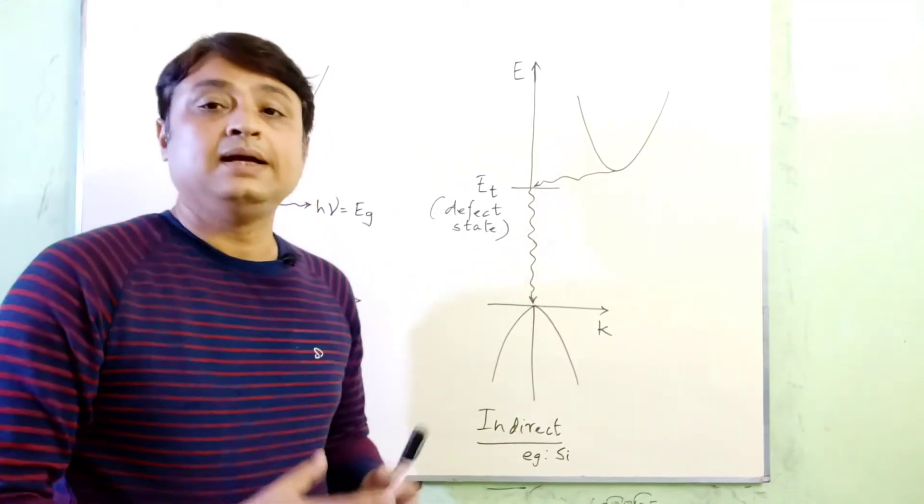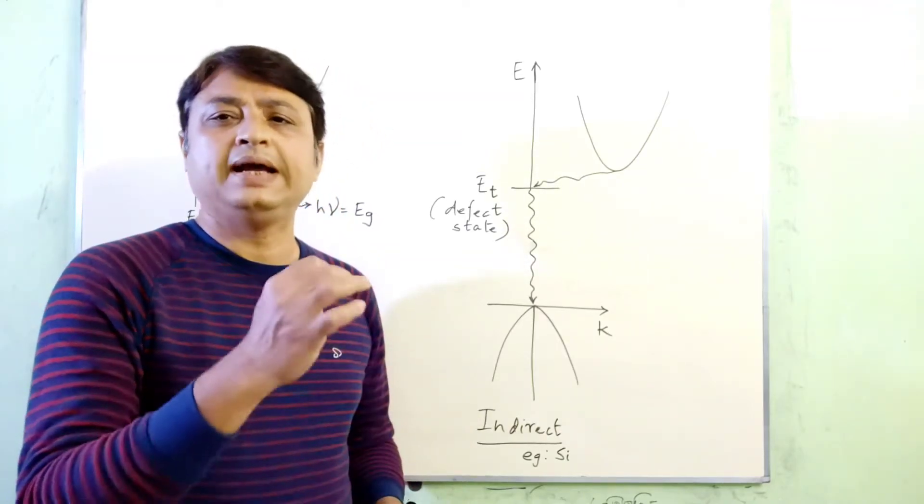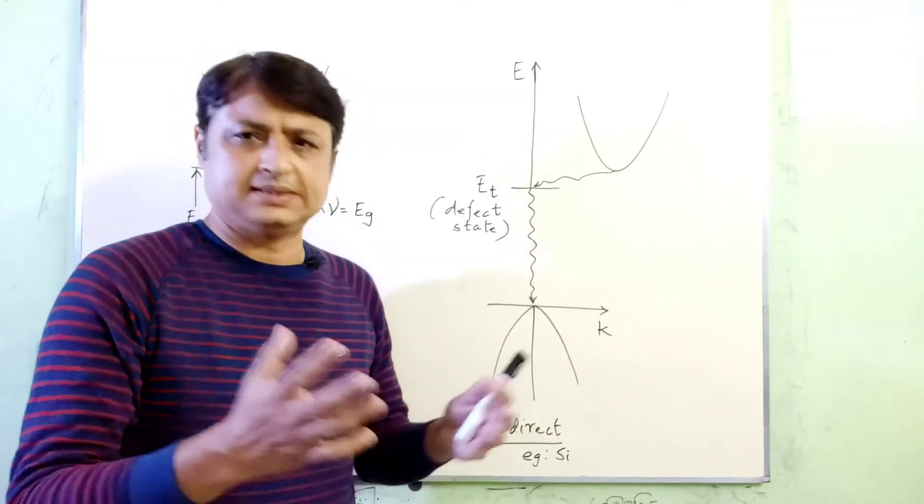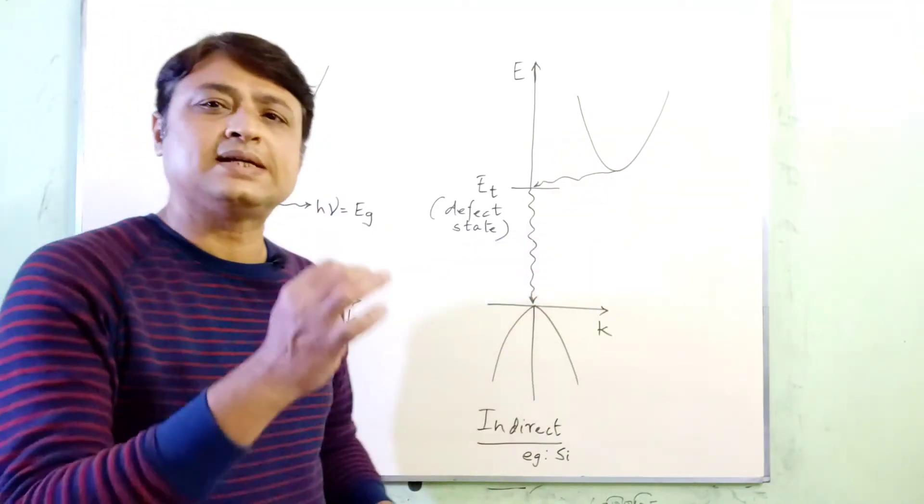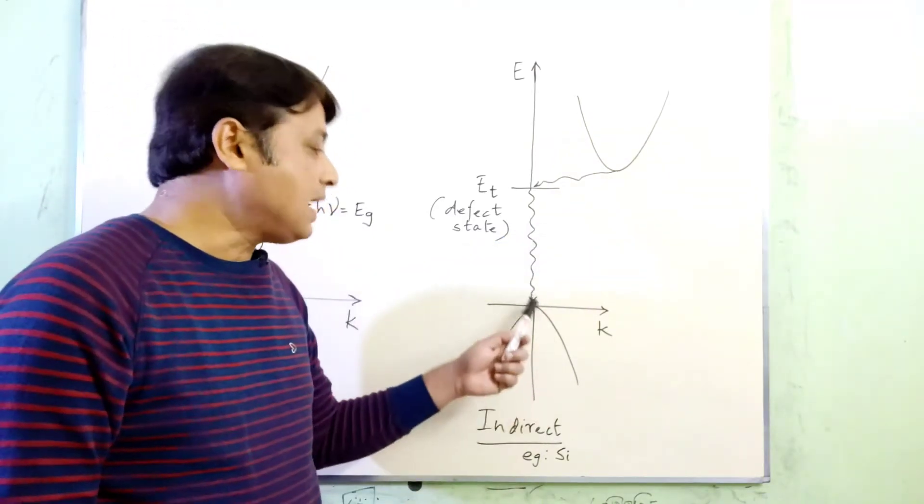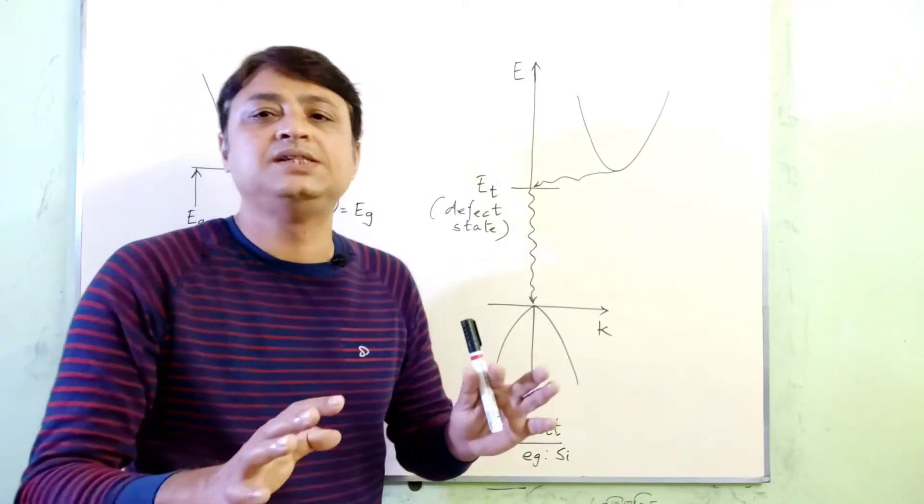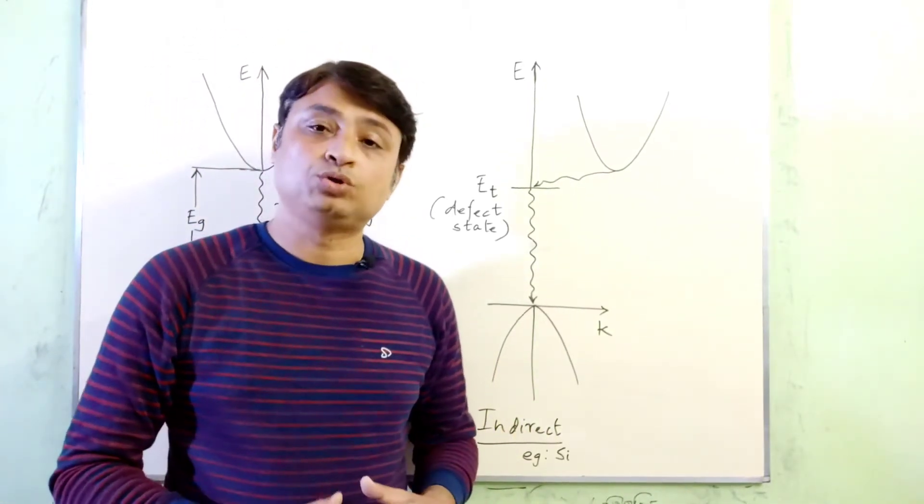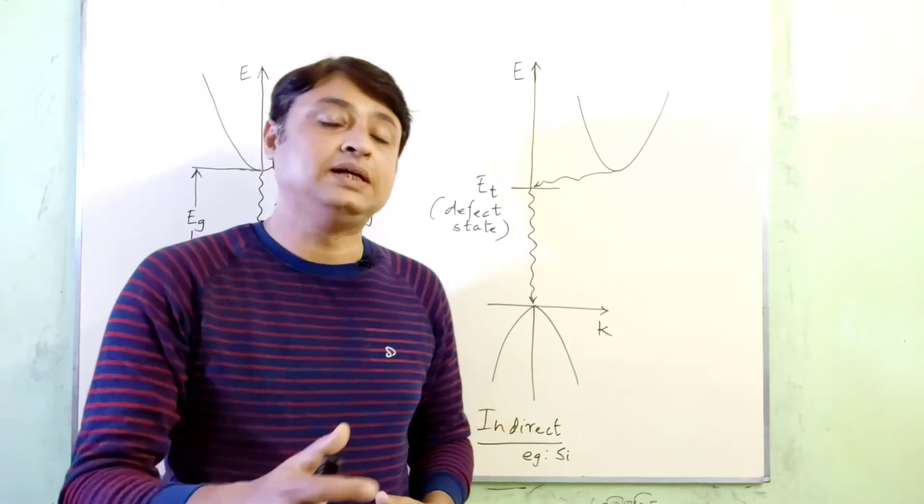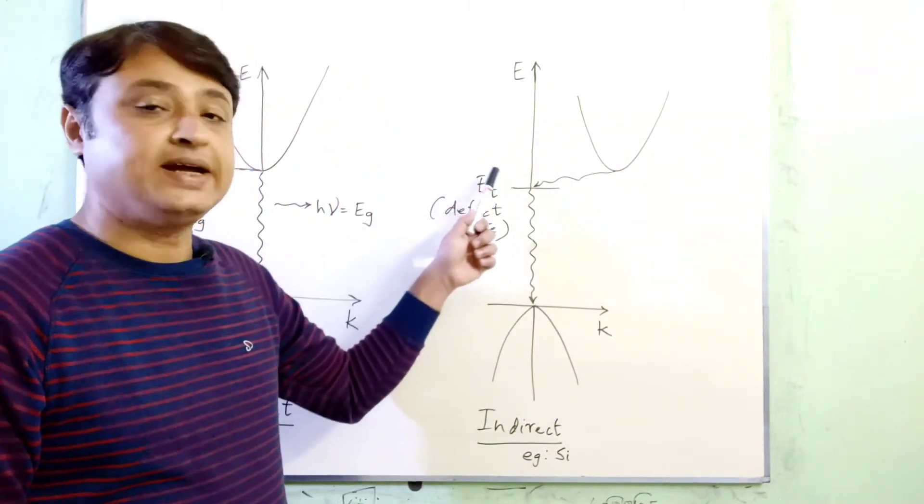On the other hand, an electron at the conduction band minimum of an indirect bandgap semiconductor, such as silicon, cannot jump to the maximum of the valence band without undergoing a change in momentum. For example, it may go through some defect states within the band structure, shown here as the defect state ET.